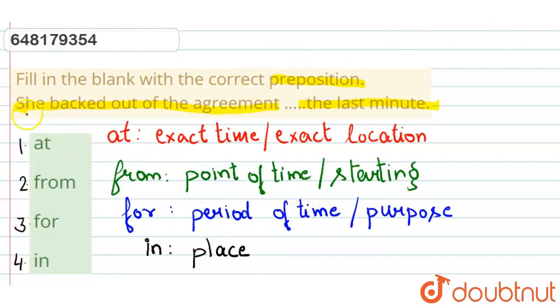अब sentence के according देखेंगे. She backed out of the agreement, dash the last minute. है ना, वो agreement से उन्होंने backed out कर लिया last minute पर. Last minute जो एक exact time दे रखा है, तो exact time को denote करने के लिए हम क्या use करते हैं. हम use करते हैं at. इसलिए हमारा answer हो जाएगा at. Thank you.